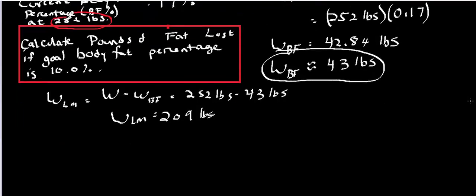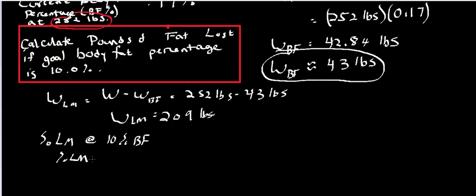Now I need to figure out the percent lean mass at 10% body fat. If 10% is body fat, then the percent lean mass has to be 90%, because 10% plus 90% equals 100%. We can also write the percent lean mass as 0.9.